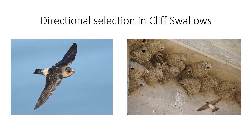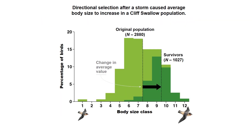Here we've got cliff swallows — these small birds you've probably seen nesting under bridges out west, where hundreds of them come out. During a storm a few years ago, they had data on cliff swallow sizes. The storm killed a lot of cliff swallows, but not randomly — the larger individuals were more likely to survive. This was directional selection: it selected only for the larger ones. So any alleles involved with making these cliff swallows slightly larger were kept and sent to the next generation, becoming more dominant. Hence, we've changed the allele frequencies in one direction to make these birds larger.